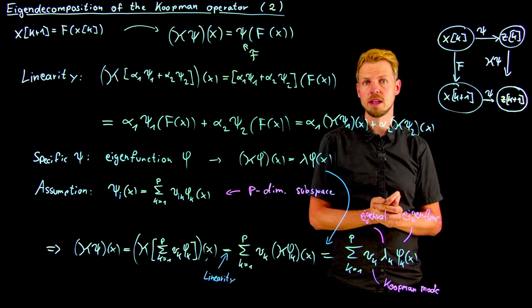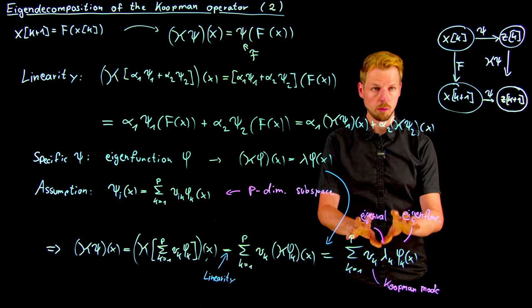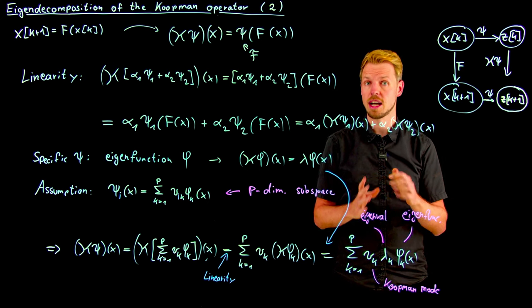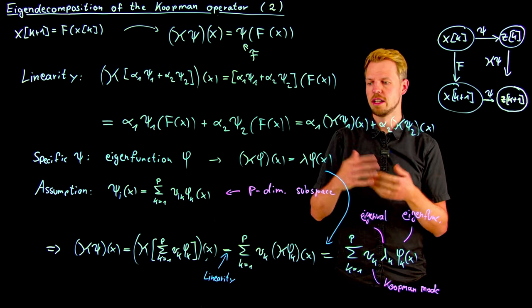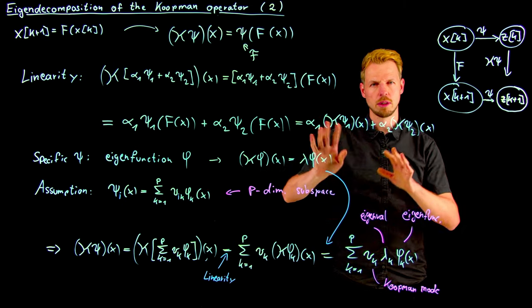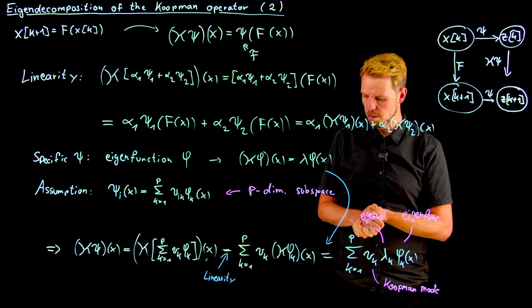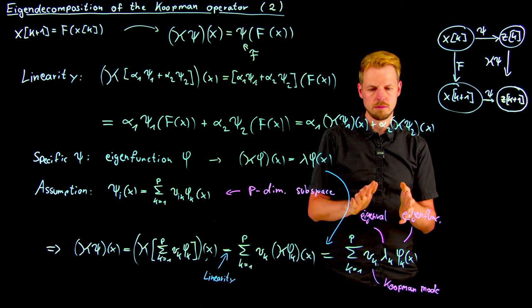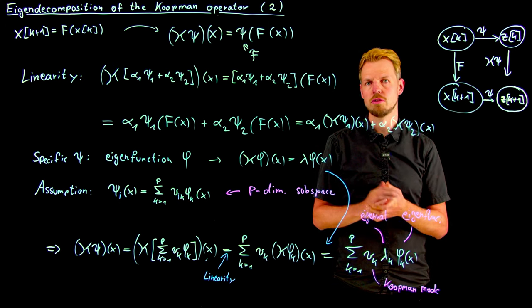And questions that remain are: how can we approximate this from data? And how can we approximate this in finite dimension? I've simply introduced the p, but we will see that this is a little bit more complicated. But this is topics of the next videos.